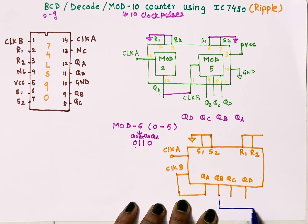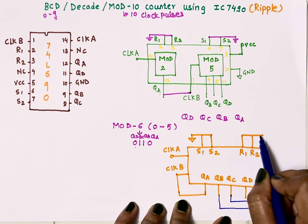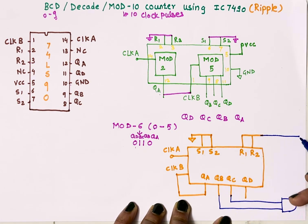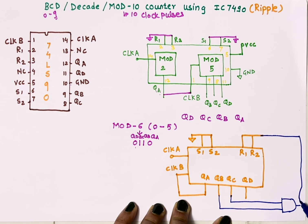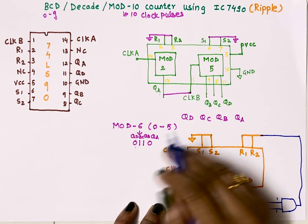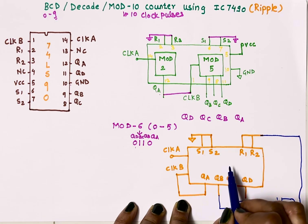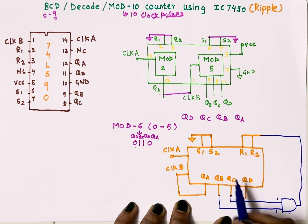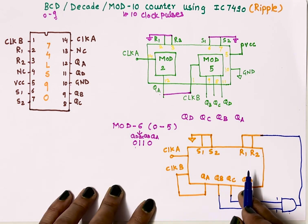I will take QB and QC and connect them to input of AND gate so that when both of them will become 1, then output of this AND gate will become 1 and I'll connect it to reset pin. So as soon as both of them will become 1, output of this AND gate will become 1, it will reset this entire circuitry and our counter will start counting from 0.